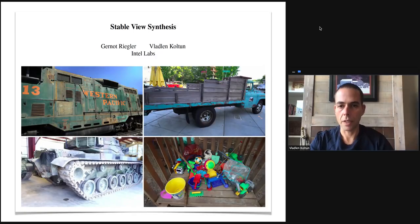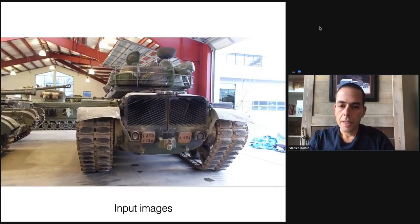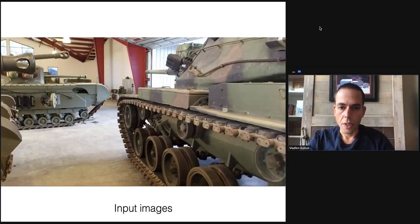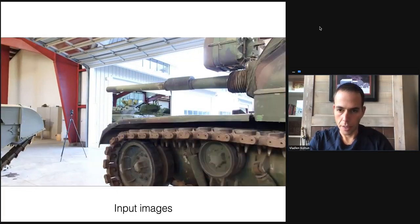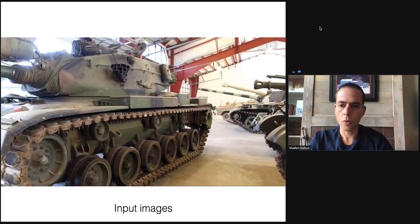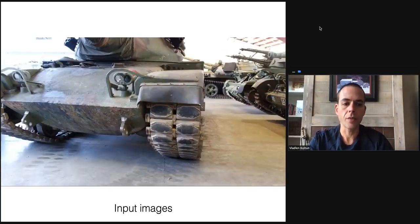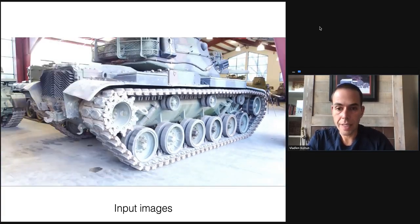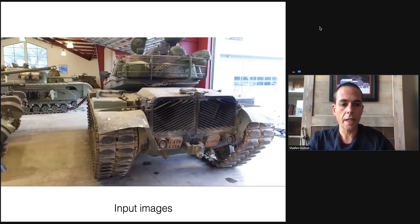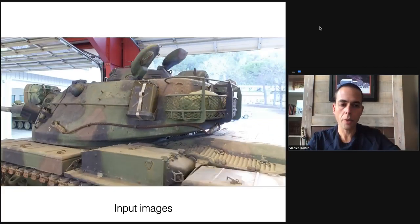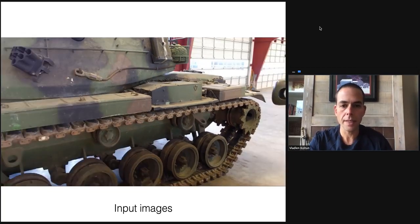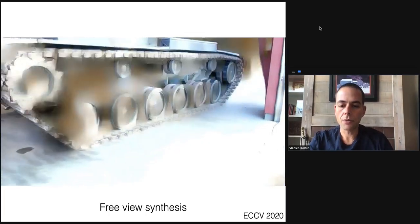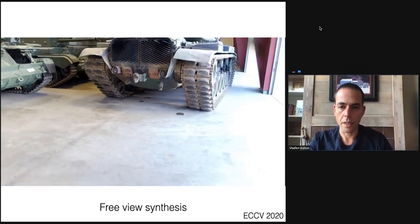Let's begin with Stable View Synthesis, a direct follow-up on the Free View Synthesis project. The setting is the same: we have a number of images of a large-scale unstructured scene in the real world, as in this tank museum — one of the scenes that gives the Tanks and Temples dataset its name. Our goal is to process this set of input images so that we can move freely in the scene post-hoc, rendering realistic appearance from any point of view. Here are the results of Free View Synthesis from last year.